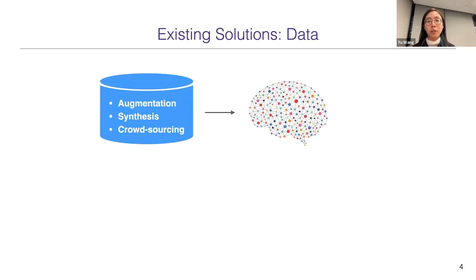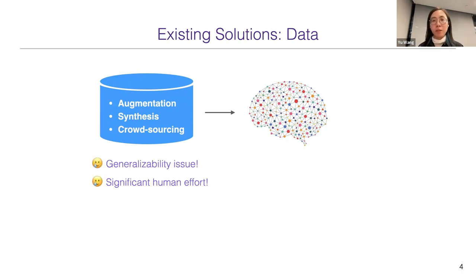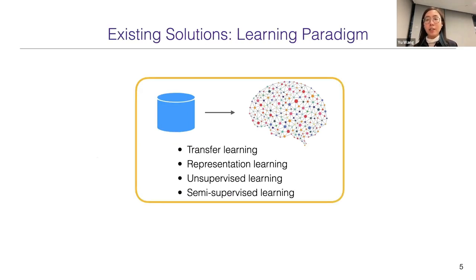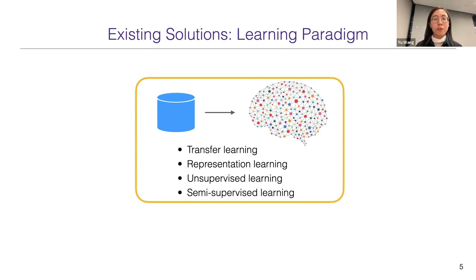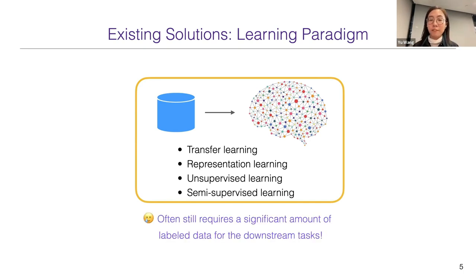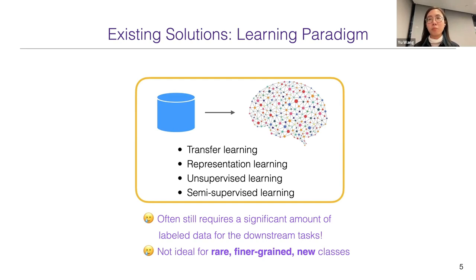Machine listening has suffered greatly from label data scarcity. Existing solutions typically tackle this from two aspects: data and learning paradigm. To gather more data, people try data augmentation, synthesis, or crowdsourcing. However, these methods either suffer from generalizability issues when applying models to real audio, or still require significant human effort. On the other hand, people try different learning paradigms — transfer learning, representation learning — to use common knowledge and enable smaller downstream models requiring less training data. However, these models often still require hundreds or thousands of labeled examples, which can be hard to collect, especially for rare, fine-grained, or new classes like a rare instrument, a specific type of guitar, or a new sound effect.